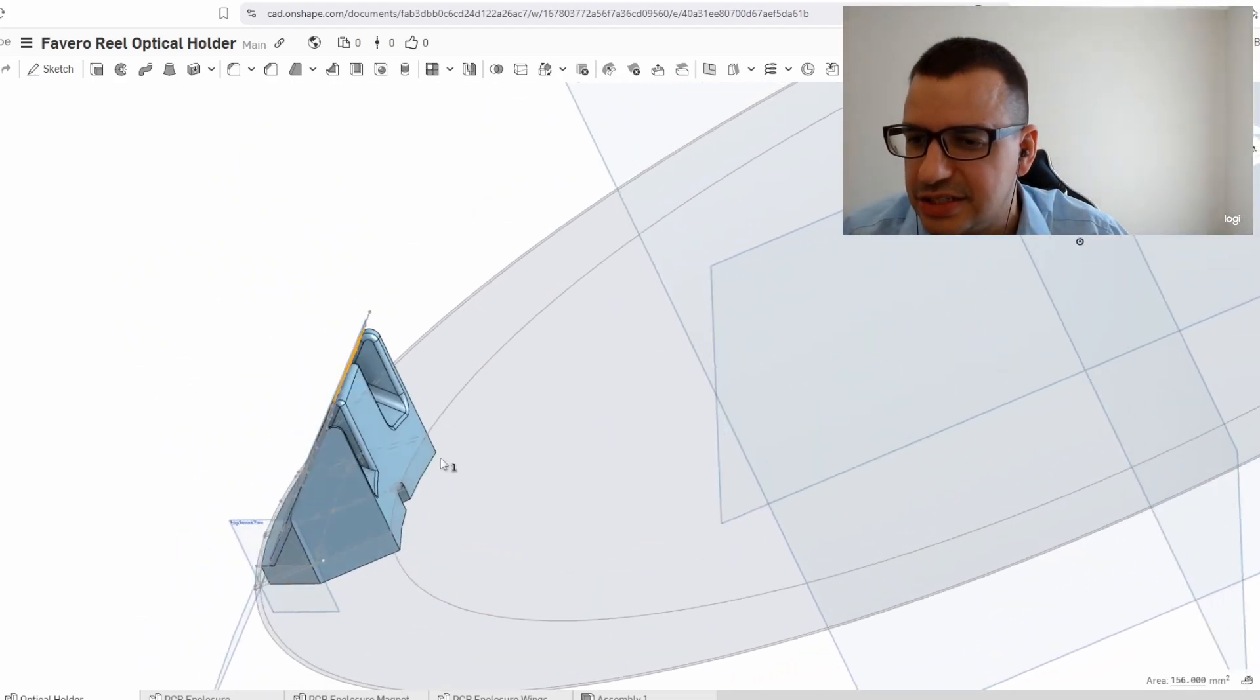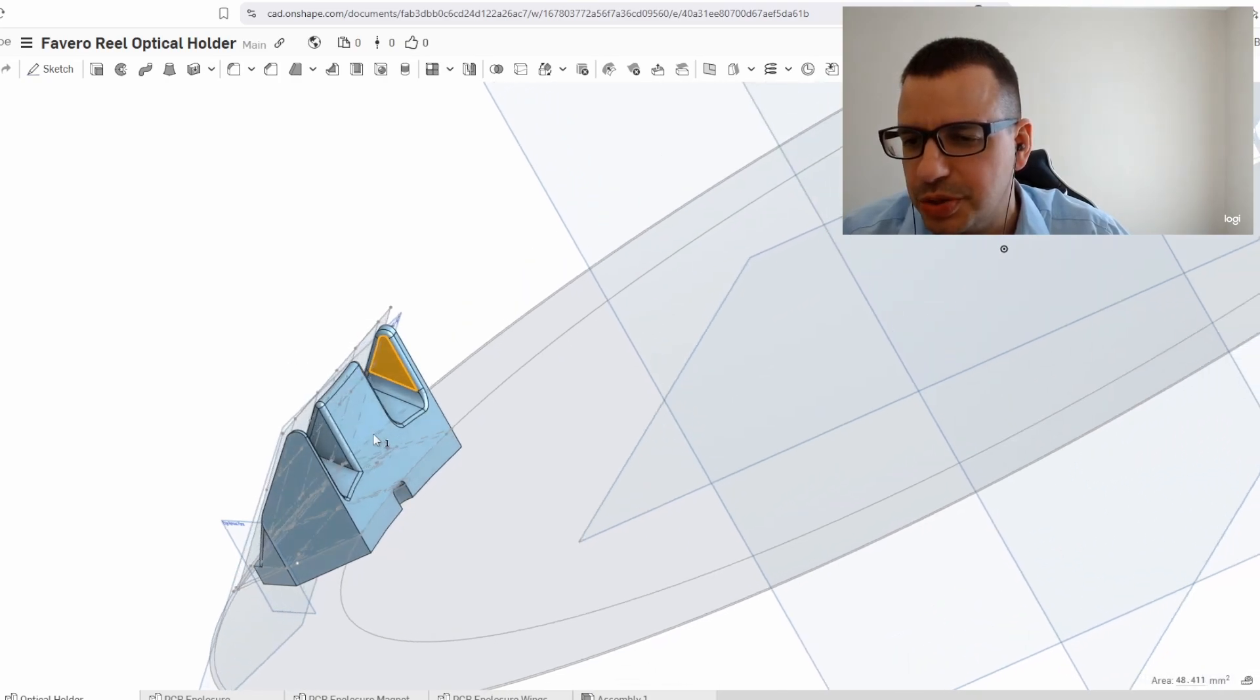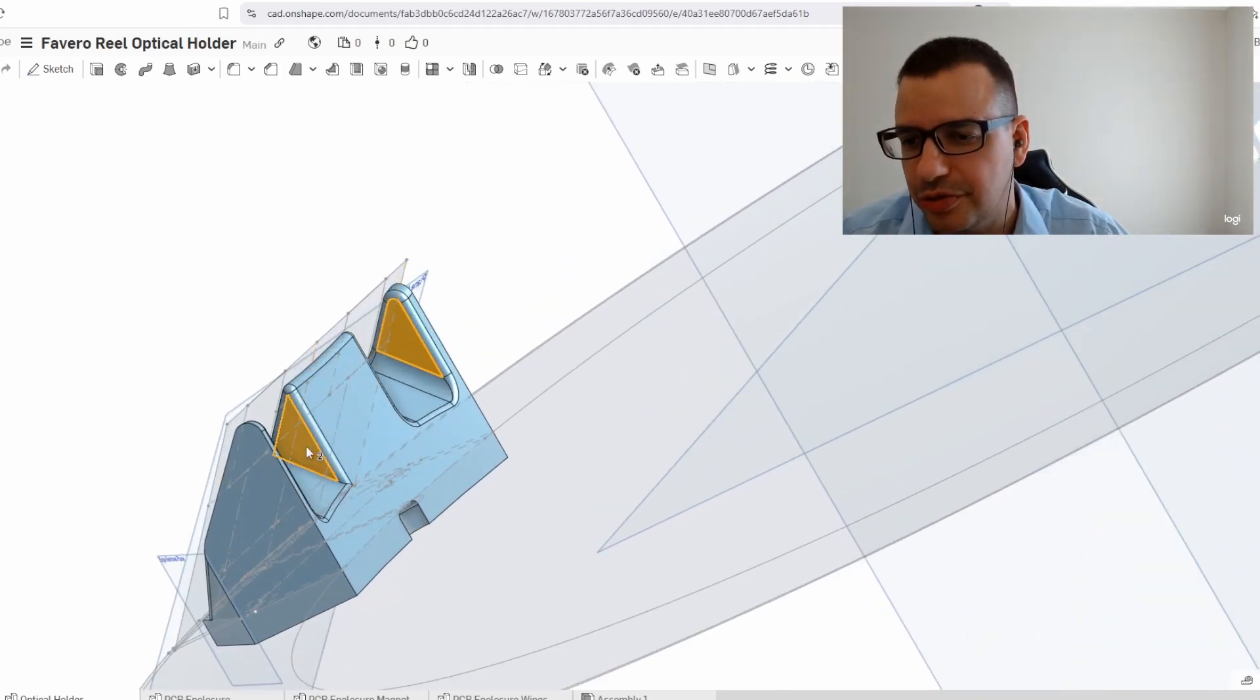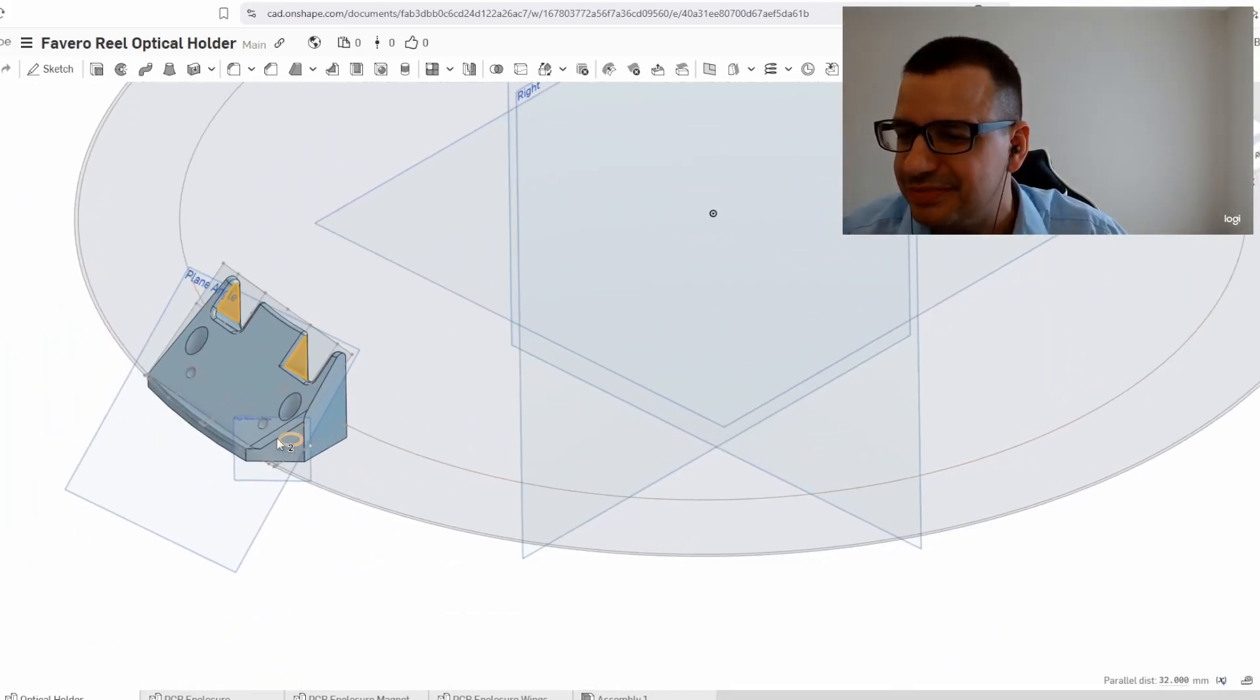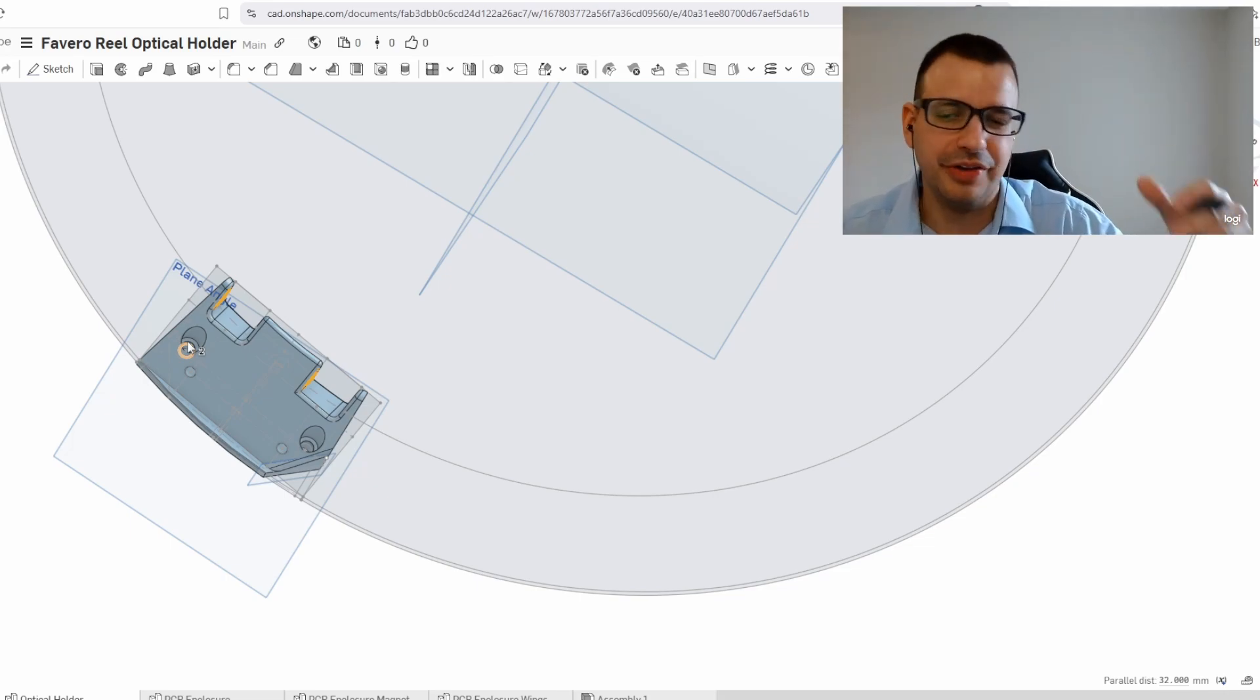And just to get some sense of perspective, the circumference of the drum is about one meter. The distance between the two sensors, because we have two of them, will be about 32 millimeters. These holes right here are just used to screw the holder onto the Fivero base. These two holes are to basically screw the two optical sensors in.